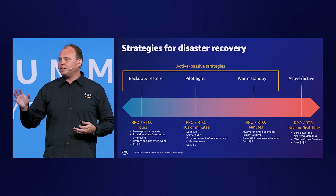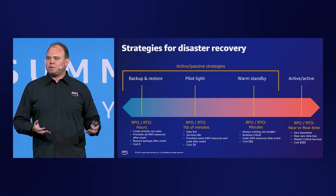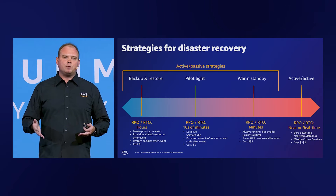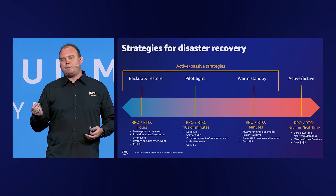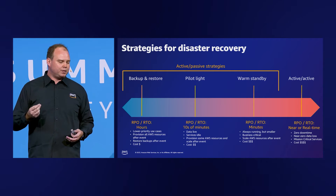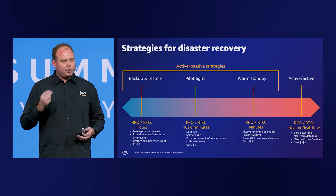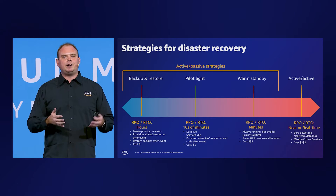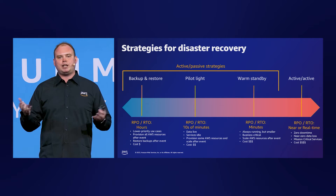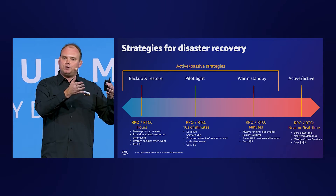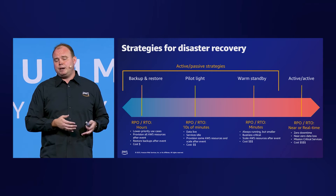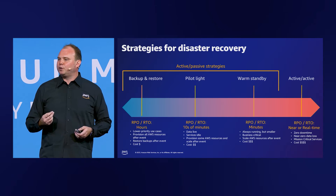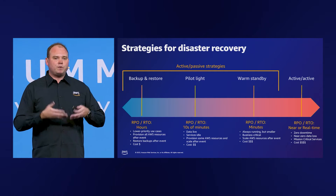With a warm standby — what you might traditionally think of as active and passive — data is replicated into multiple availability zones or multiple regions, but those resources may need to scale up a bit. Your RTO and RPO could be measured in single-digit minutes. Active-active keeps the application working across both sets of the replicated workload, providing near-zero or zero downtime, where users might not even notice a failure. For mission-critical workloads, this is an essential way to provide robust availability.